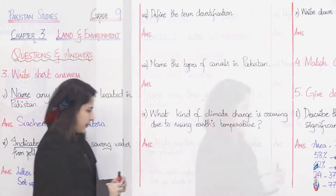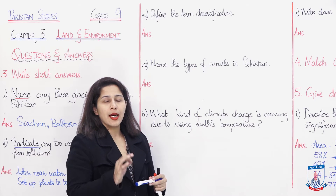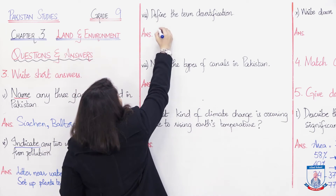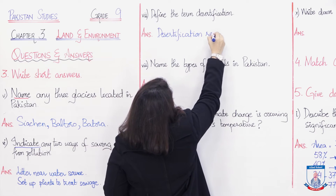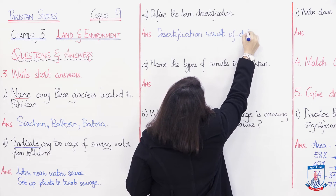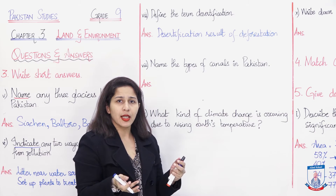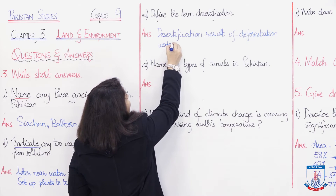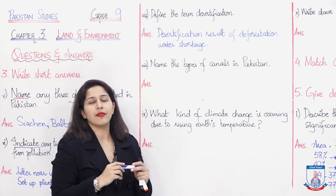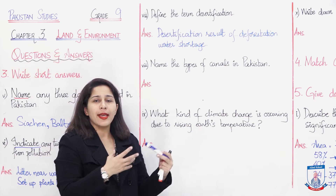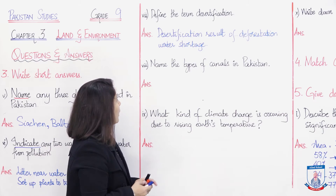Define the term desertification. We have to give the definition of the term desertification. Desertification was the result of deforestation. It refers to land becoming barren — either because trees are excessively cut down, or because of water shortage. So we talk about the drying up of land either because of deforestation or water shortage, making it unfit for cultivation, farming, or agriculture.